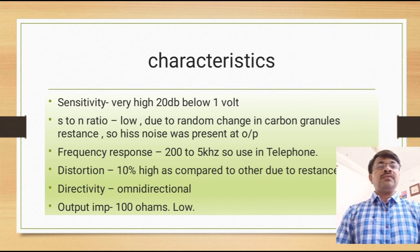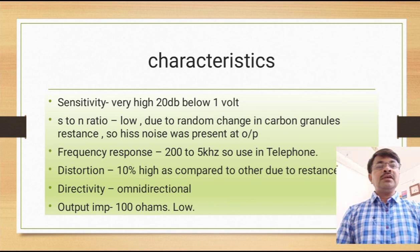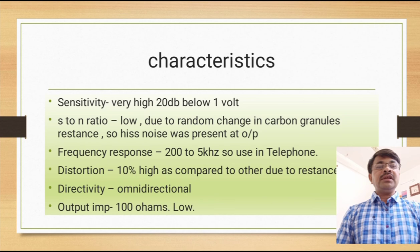These are some important characteristics of the carbon microphone. Sensitivity: the output voltage of the microphone is high, below one volt. Signal-to-noise ratio is poor due to the random change in carbon granule resistance, so this type of noise is present at the output. Frequency response is 200 Hz to 5 kHz, so it can be used in telephony — telephony systems contain a bandwidth of less than 5 kHz. Distortion is 10%, which is high compared to other microphones, due to the internal resistance of the carbon material.